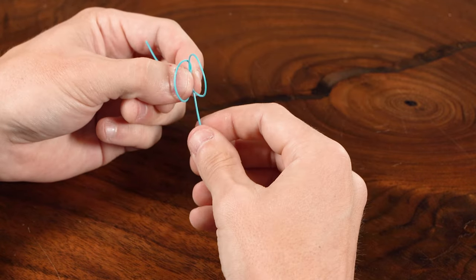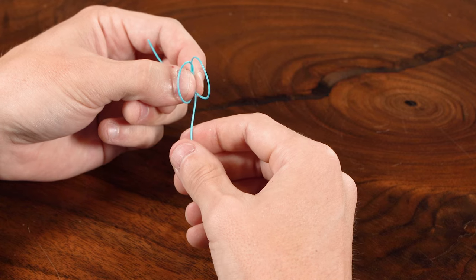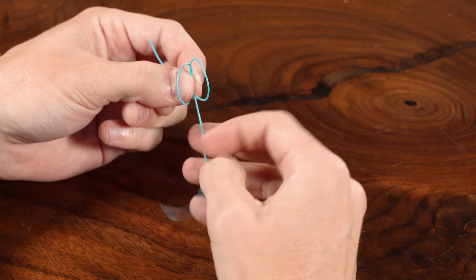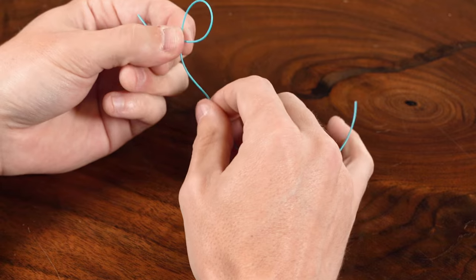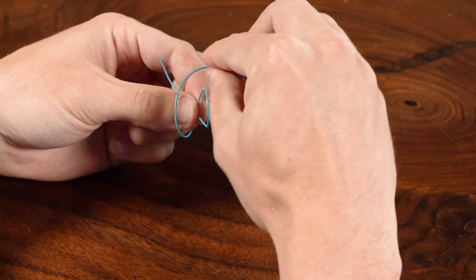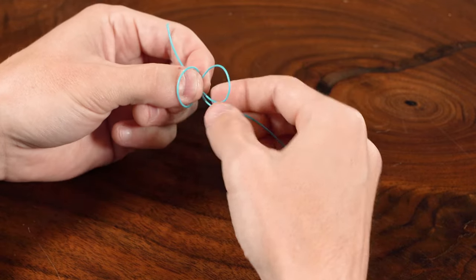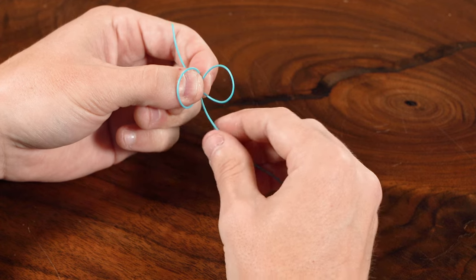Sometimes you can use your thumb to hold that in place if it's a more rigid material. This fly line isn't as great for that. So again, you're going to make that loop behind and then wrap your material forwards and then control that with your left thumb and forefinger again.